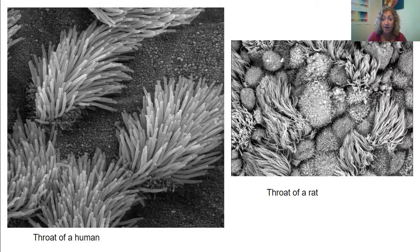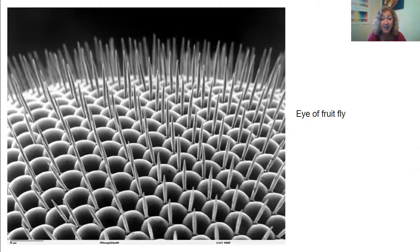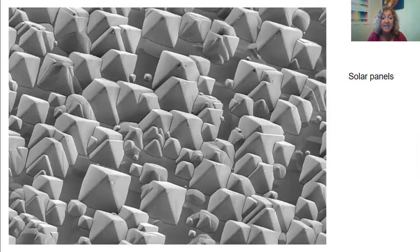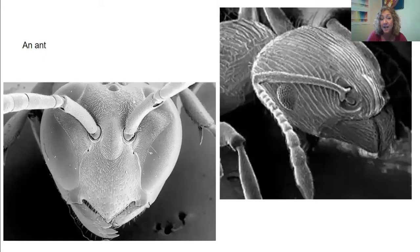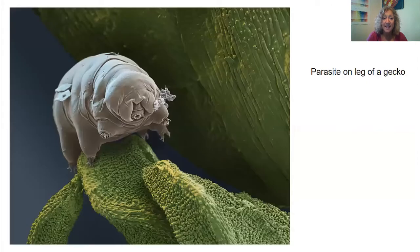We can learn a lot about ourselves and others by looking really closely at things. This is the eye of a fruit fly. These are the cells of a solar panel — the little pieces that catch light. Ants and other insects are surprisingly hairy when you look at them really close up. And this is a parasite on the leg of a gecko.